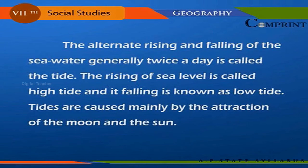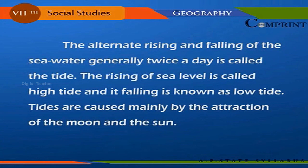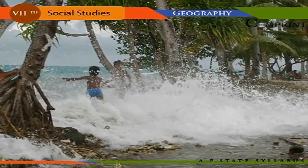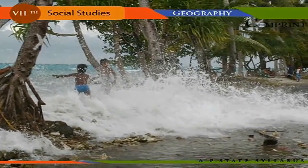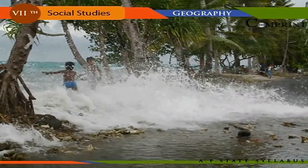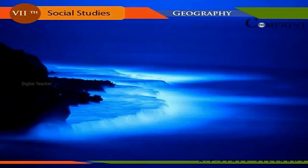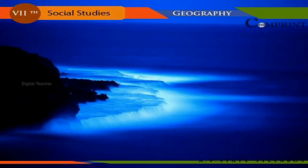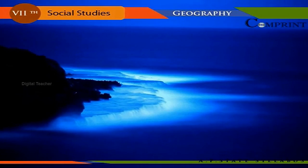The alternate rising and falling of sea water, generally twice a day, is called the tide. The rising of sea level is called high tide and its falling is known as low tide. Tides are caused mainly by the gravitational attraction of the moon and the sun. When the moon, the earth, and the sun are in a straight line — on new moon (Amavasya) and full moon (Purnima) days — the combined gravitational pull causes very high tides known as spring tides. Tides are of great help to fishing, trade, and navigation.